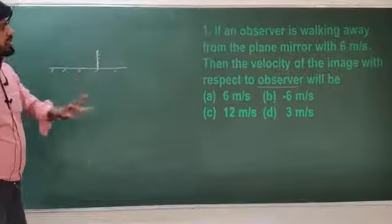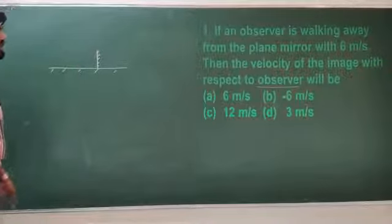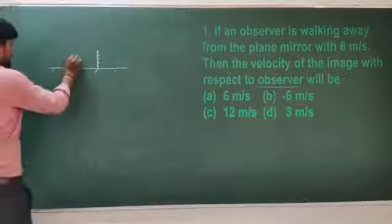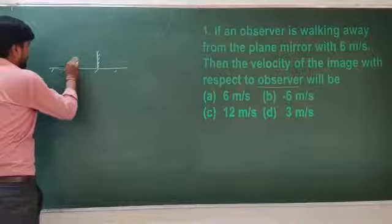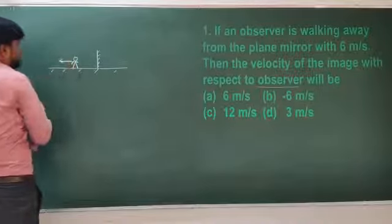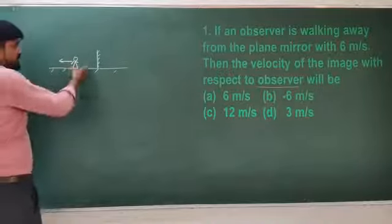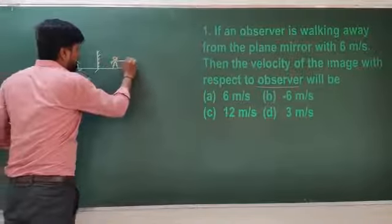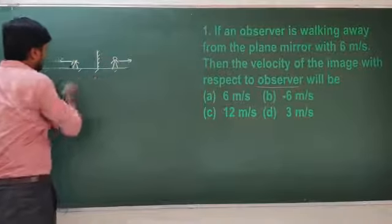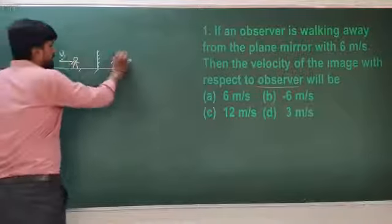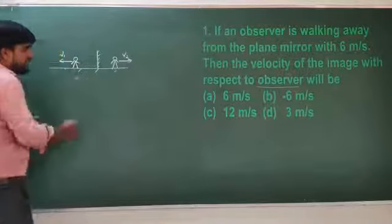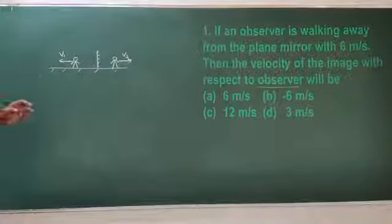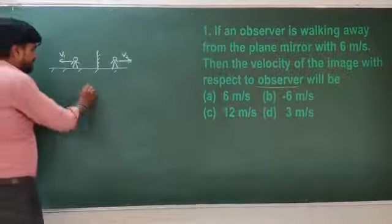If a person is moving away from the mirror, at the same time the image of the person is moving in the opposite direction with velocity V1 and V2. What they are asking is the velocity of the image with respect to the observer.